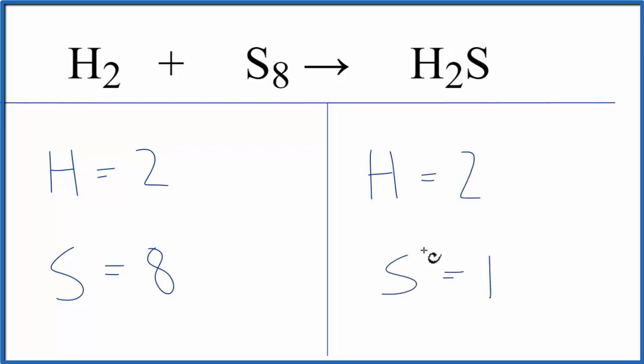To balance the equation, we want things to be the same on both sides, so we need to get the sulfurs to be the same. That means I need 8 sulfurs here. So I can change the number in front, the coefficient, put an 8 here.